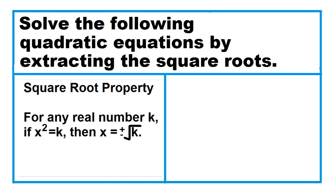Square root property: for any real number k, if x squared equals k, then x equals plus or minus the square root of k.